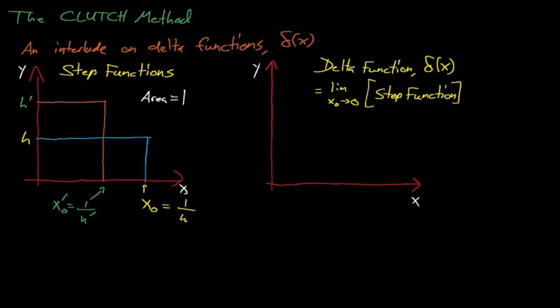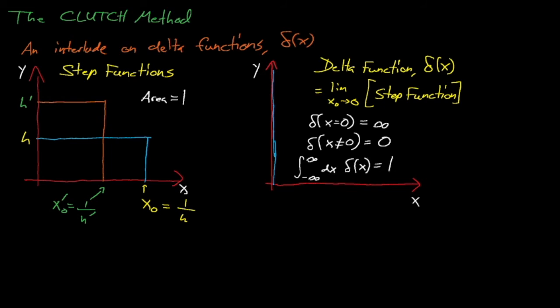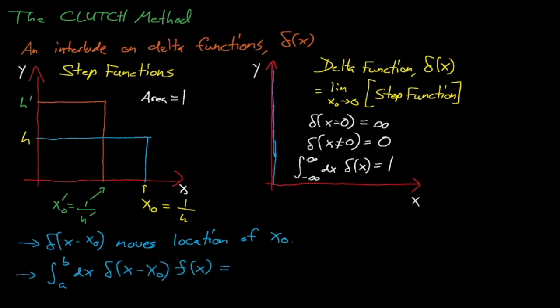This creates a function with several interesting properties. The delta function has a value of 0 everywhere except at x equals 0, where it has an infinite magnitude. Also, the integral of the delta function equals 0 unless our integral encompasses x equals 0, in which case the integral of the delta function is equal to 1. If we have a delta function that's a function of x minus x0, then we can shift the location of our delta from being centered at x equals 0 to being centered around any x0. Perhaps most interesting is what happens when we take the integral of a delta function times some other function f of x. If our integral doesn't encompass x0, then this integral equals 0; but if it does encompass x0, then this integral equals f of x evaluated at x equals x0.